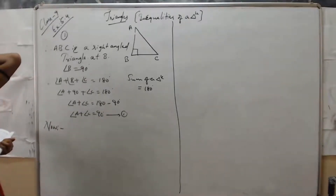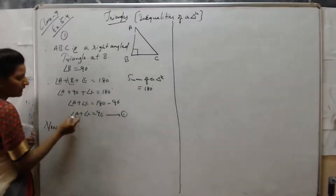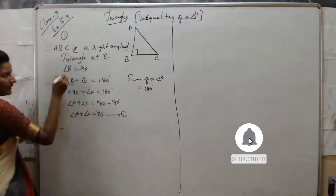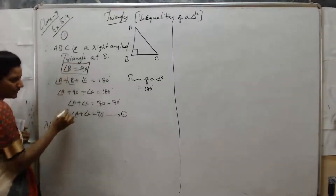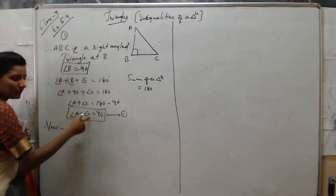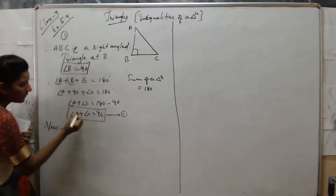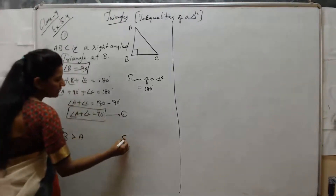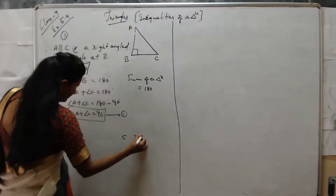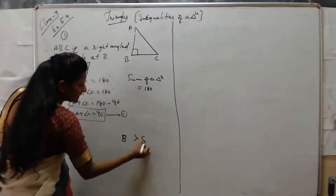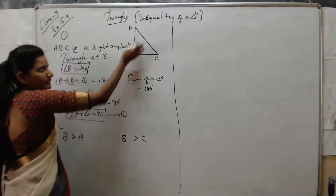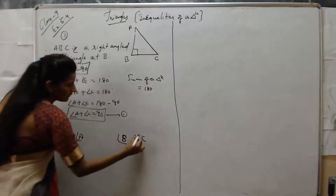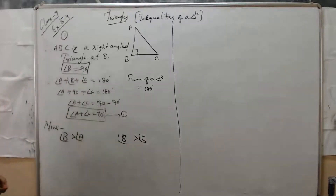A and C are each less than 90 degrees, whereas B is equal to 90 degrees. Here A and C together sum to 90 degrees. By using these two results, we can write: B is greater than A, and B is greater than C.